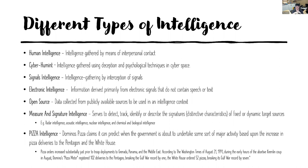It's not just related to cyber, although there are now a lot of cyber elements in this. There's human intelligence, gathered from interpersonal connections — from my perspective you'd think of interrogation, investigation, police, and military. Cyber human intelligence is more around using psychological techniques to deceive people and extract information. There's signal intelligence — here in Australia the ASD intercepts transmissions and signals.